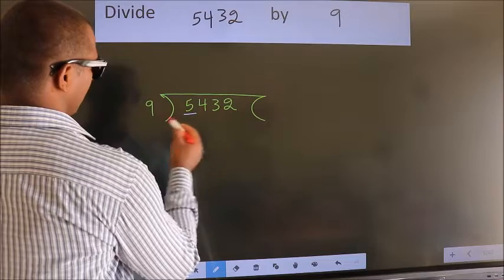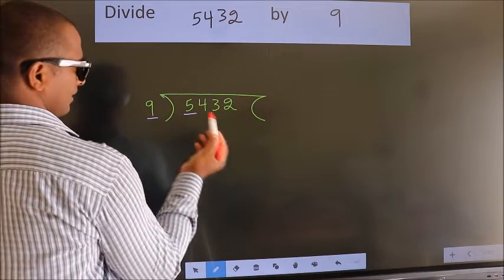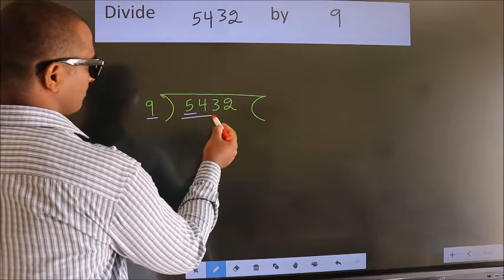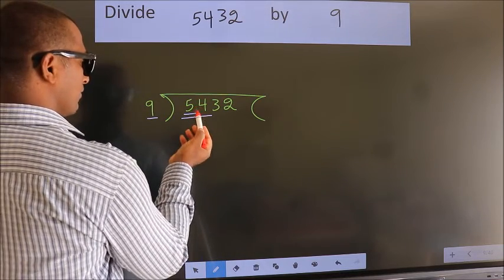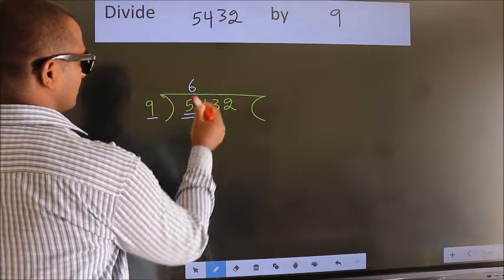Here we have 5. Here 9. 5 smaller than 9, so we should take 2 numbers: 54. When do we get 54? In 9 table. 9, 6, 54.